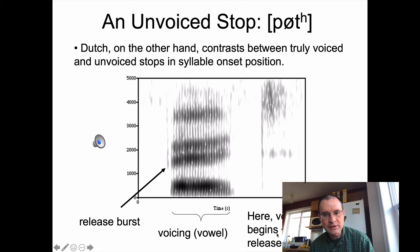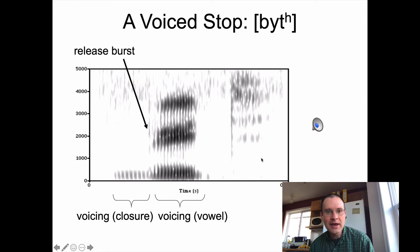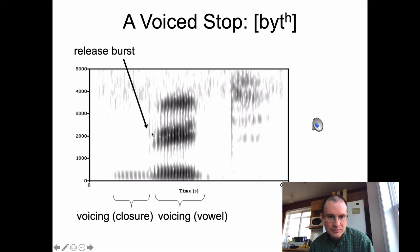In the unaspirated stop example, vowel voicing begins about seven milliseconds after the release burst — a very short amount of time; you can't really even see any turbulence there. Contrasting that with a truly voiced stop, also from the production exercise: we see the release burst, there's no aspiration, and we go straight to the vowel with formant frequencies shifting around.